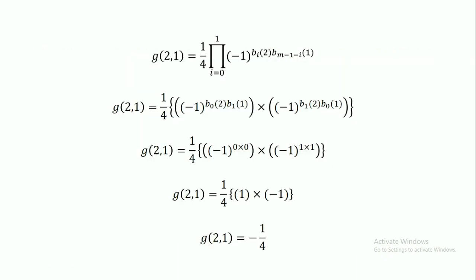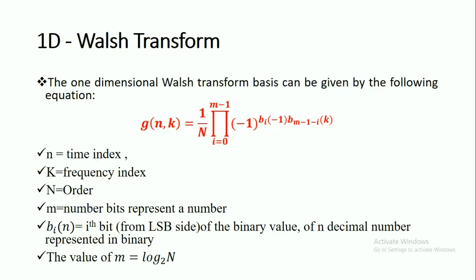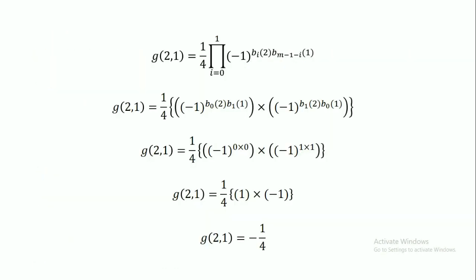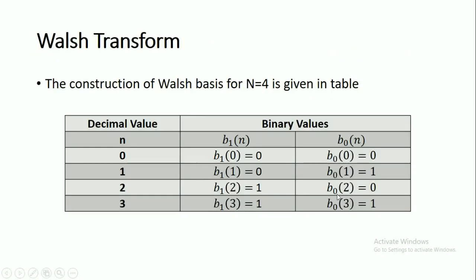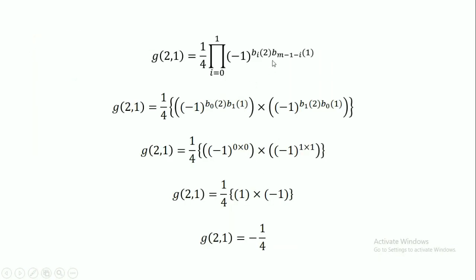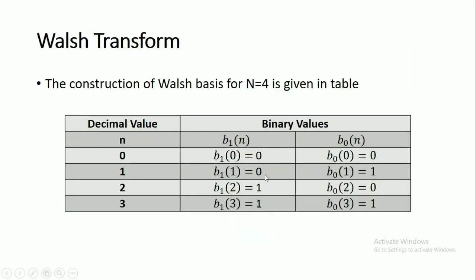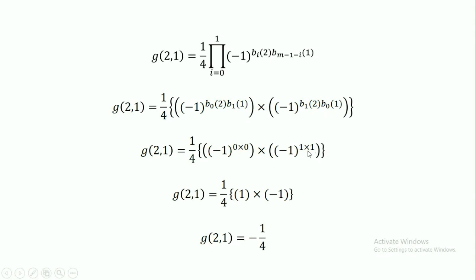Now we calculate sequency using the 1D Walsh transform. For g(2,1): n=2 and k=1. Substituting into the formula, we need b₀(2) and b₁(1). From the table, b₀(2)=0 and b₁(1)=0, giving (-1)^(0·0) = 1. Also, b₁(2)=1 and b₀(1)=1, giving (-1)^(1·1) = -1. Simplifying, g(2,1) = -1/4.